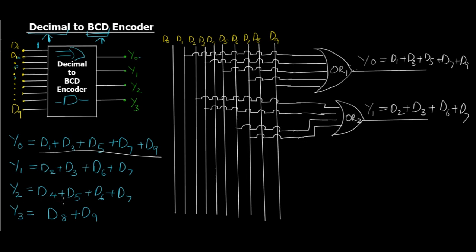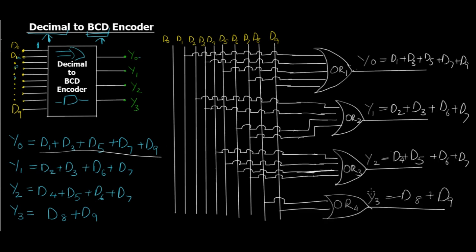Then we have Y2 with D4, D5, D6, D7. Now you get the point. Let me just draw both the remaining OR gates and you'll understand it exactly because it's the same repeat procedure. As you can see on the screen, this is the circuit diagram for a decimal to BCD encoder. It looks a little bit difficult, but once you get these outputs you can easily calculate and draw the circuit diagram because it's just an OR operation between all the outputs.